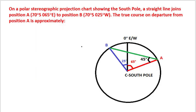To solve this question, let us understand this diagram. The black circle represents 70 degrees south latitude. Point C is the south pole. Position A is as marked, which is 70 degrees south and 65 degrees east.